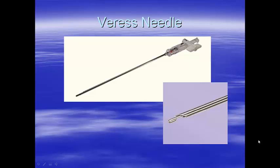The Veress needle is a small-bore needle with a spring-loaded blunt obturator that recoils to the lower end of the needle, allowing entry into the cavity without traumatizing the underlying organs.